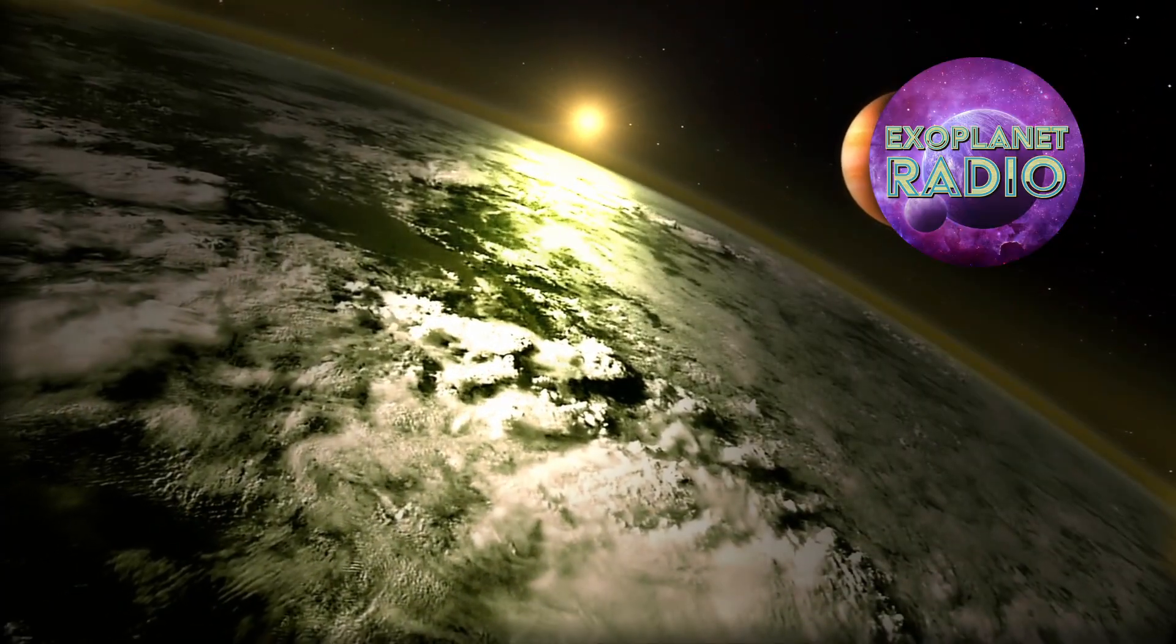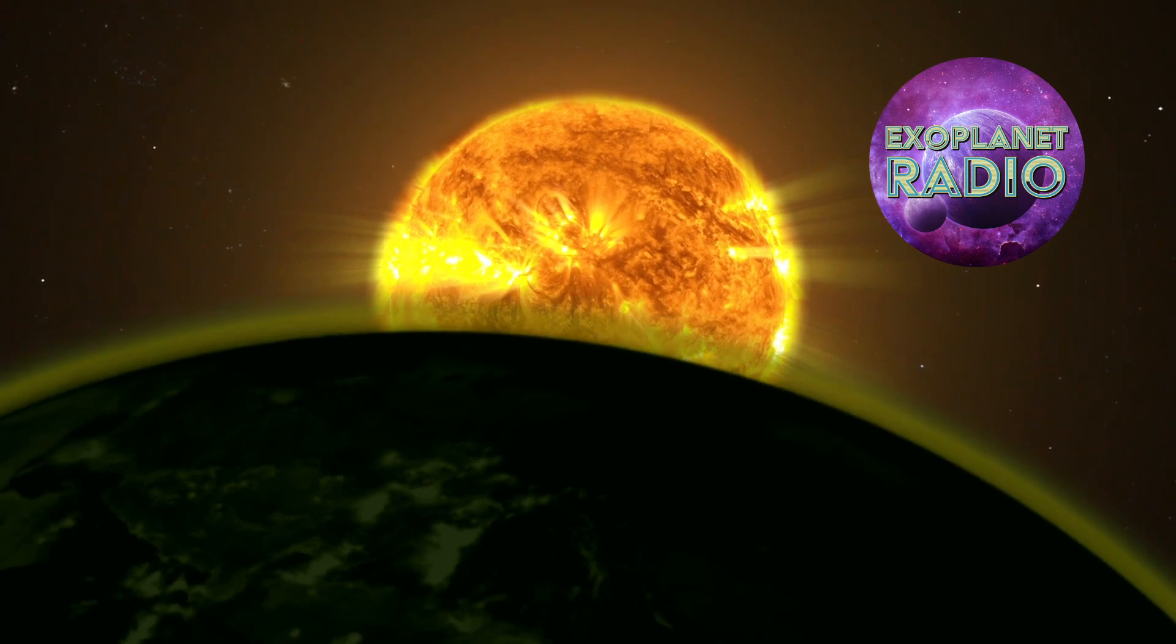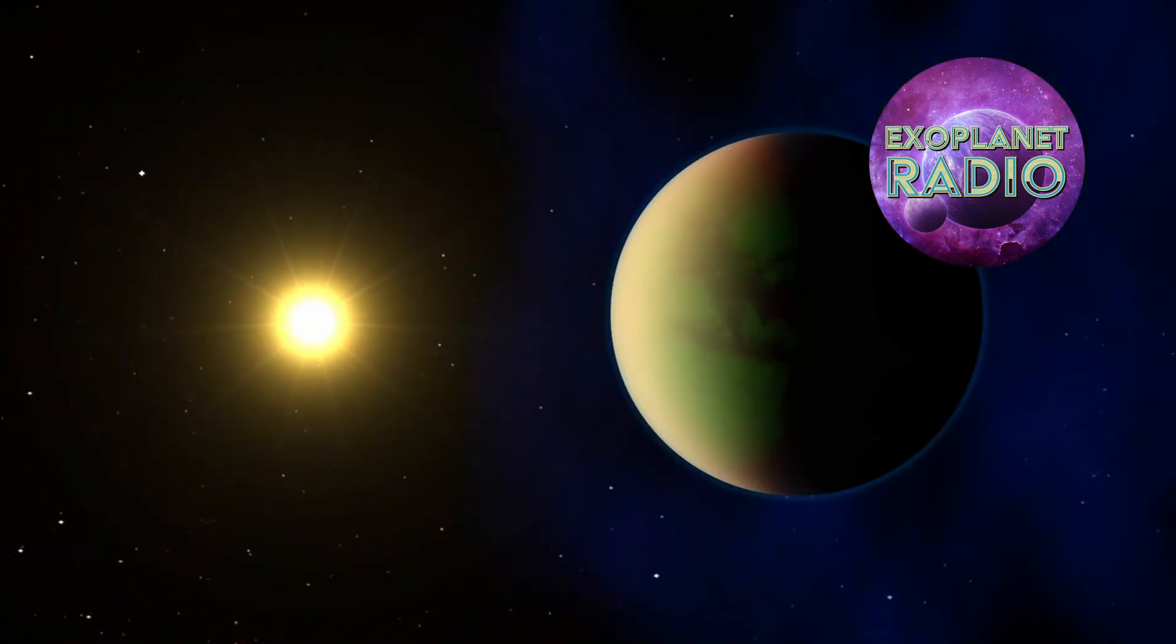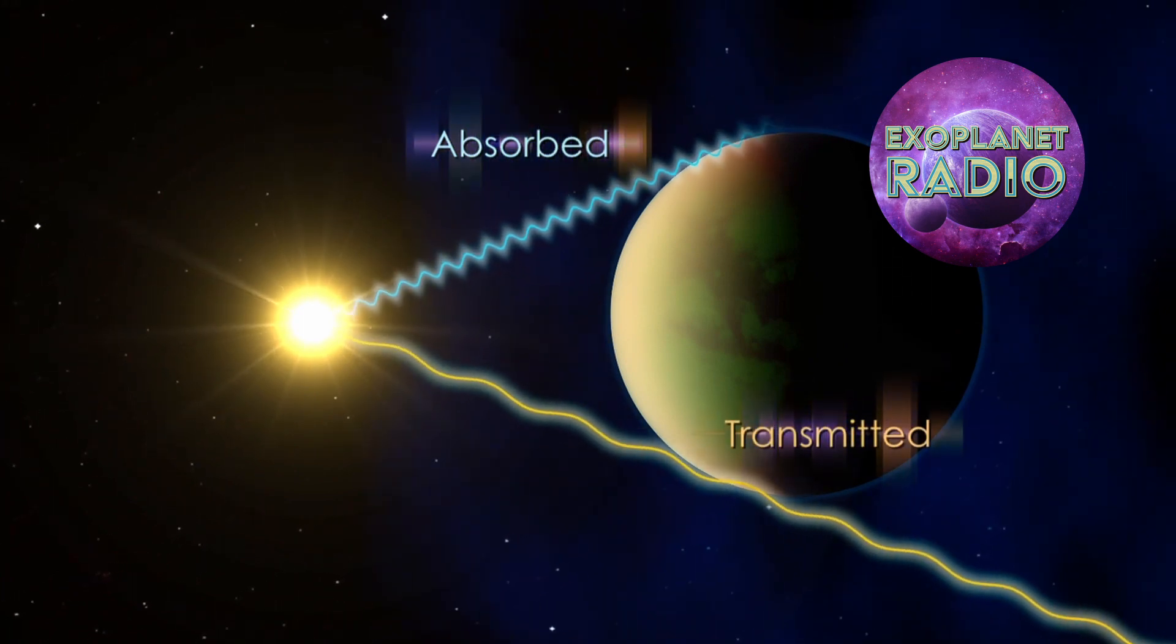The first thing we need to know is whether or not the planet has an atmosphere, and thanks to the Webb Space Telescope, we are starting to get a handle on that data point with every observation it makes using its onboard near-infrared spectrometer.